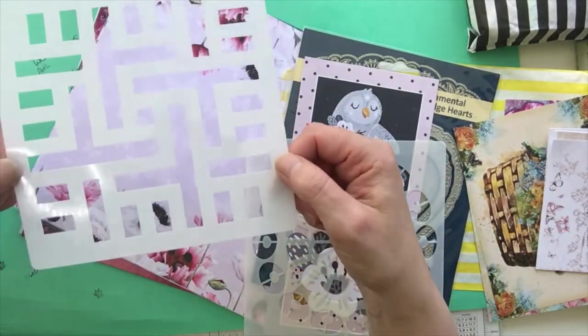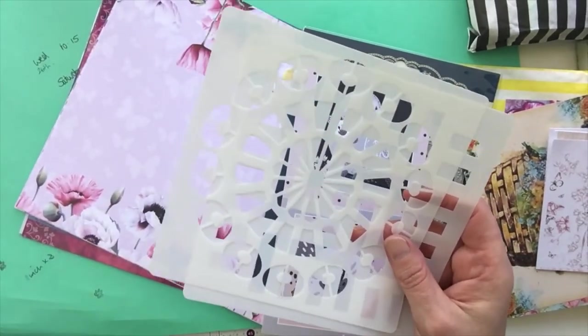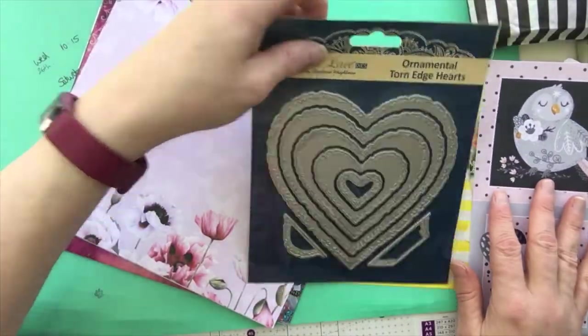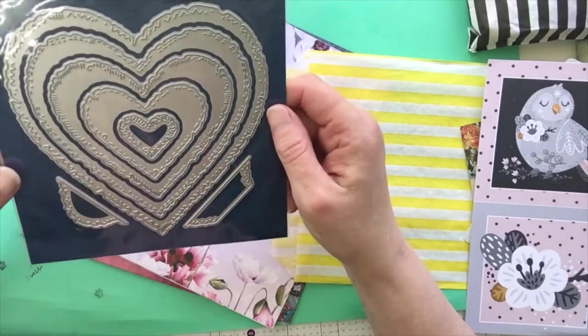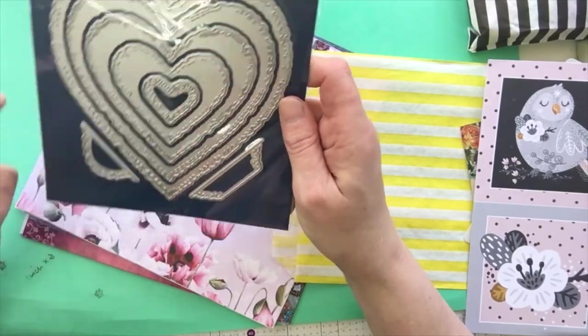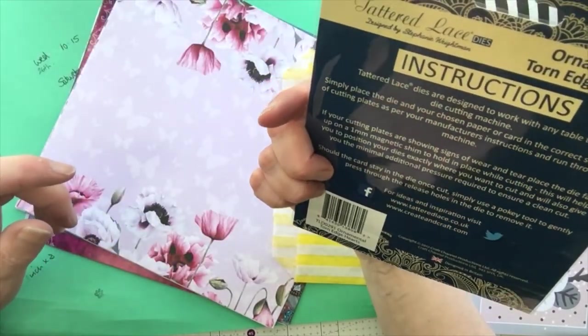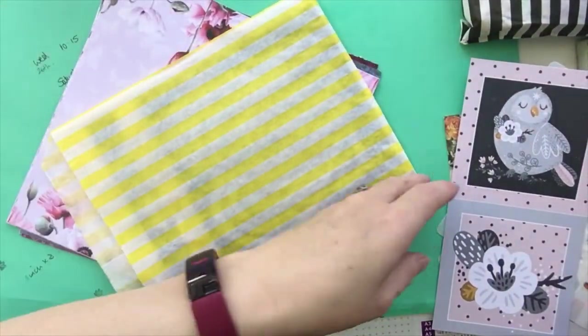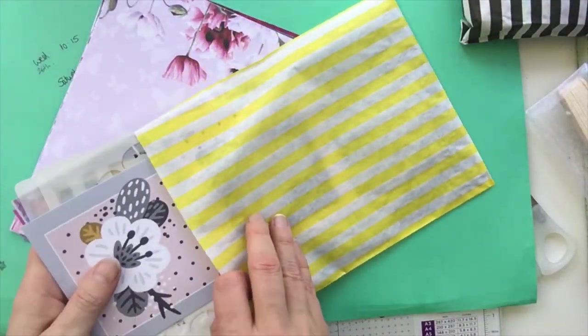Then we've got a stencil, and another stencil. And some more cut-aparts. Oh and this, Tattered Lace ornamental torn edge hearts. Wow, there's a lot there - one, two, three, four, five hearts and two little kind of banner tag bits. Lovely. Pop those all back in that bag so I know what came from what. This is an amazingly generous giveaway Amber, really generous.